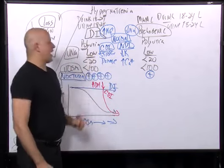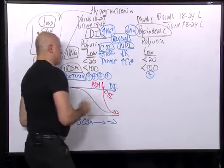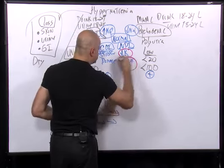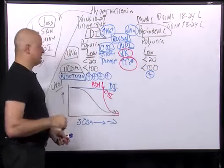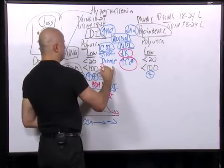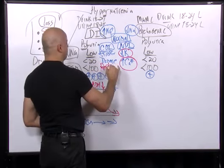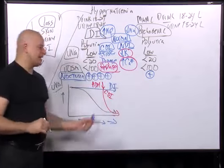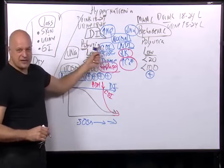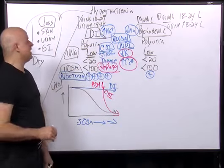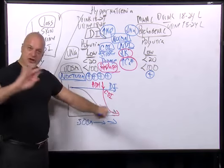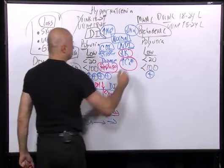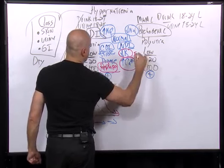So the first thing to do in nephrogenic diabetes insipidus is to fix these electrolyte disorders. In central diabetes insipidus, we just replace vasopressin — intramuscular, subcutaneous, or nasal spray — and you're set. But in nephrogenic diabetes insipidus, you fix the underlying cause.